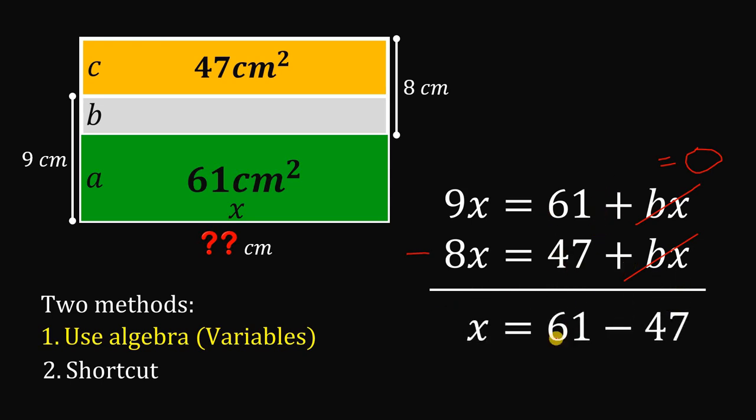And on the right-hand side, we have 61 minus 47. And take note that x is what we want to find. Now, 61 minus 47, this will give us 14. And that is the length, the missing length of this rectangle. And that is the answer.